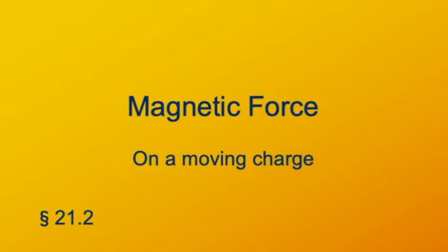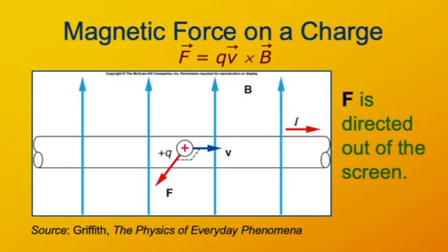Magnetic fields apply forces to electric charges only when the charges are moving. This diagram shows a particle with charge positive Q moving to the right through a uniform magnetic field B that's directed upward. The direction of the force F on this charged particle is given by the cross product of the vectors Q, V, and B.